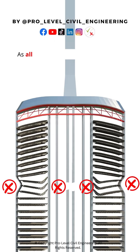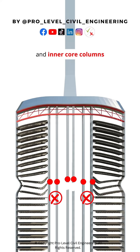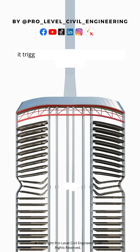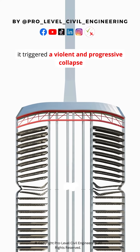As all systems failed simultaneously, including the outer perimeter columns and inner core columns, it triggered a violent and progressive collapse.